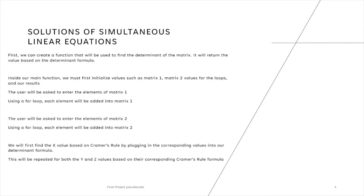If the user input is D, we will find the solutions of simultaneous linear equations with three unknown variables x, y, and z. First, we will create a function that will be used to calculate the determinant of a matrix. Based on the formula for finding the determinant, it will return a value. In our main function, we will initialize our values such as our first and second matrices, values for our loops, and our results for x, y, and z. The user will be asked to enter the elements of the first matrix, which is a 3x3 matrix. These are the three equations with unknown variables. Using a for loop, each element will be added into its corresponding spot in the matrix.